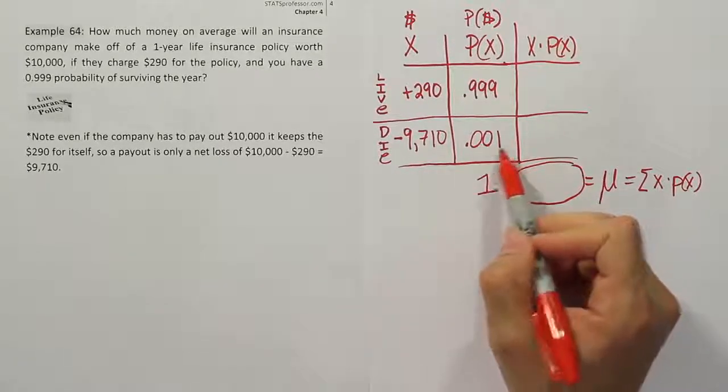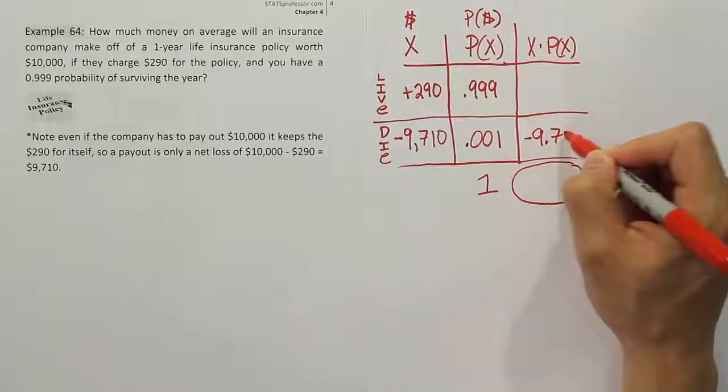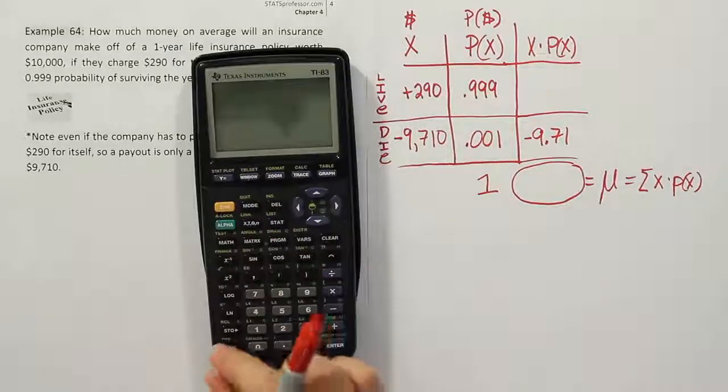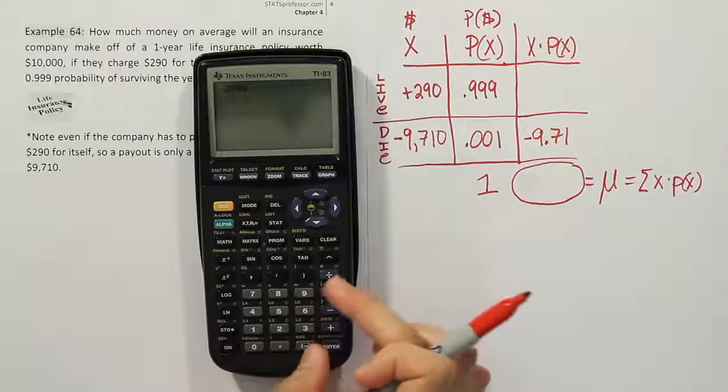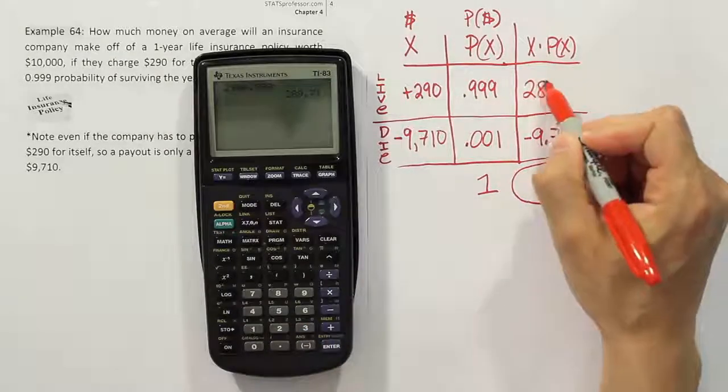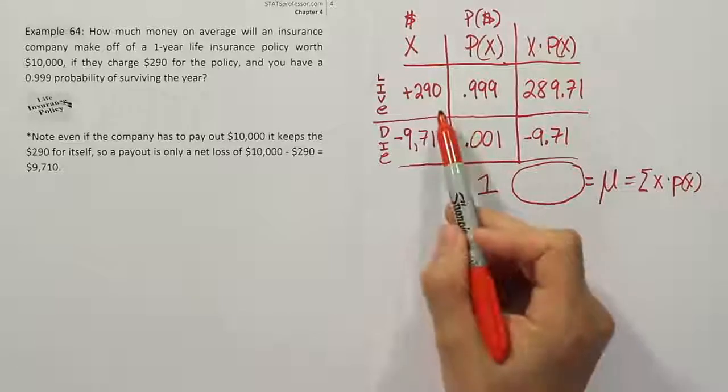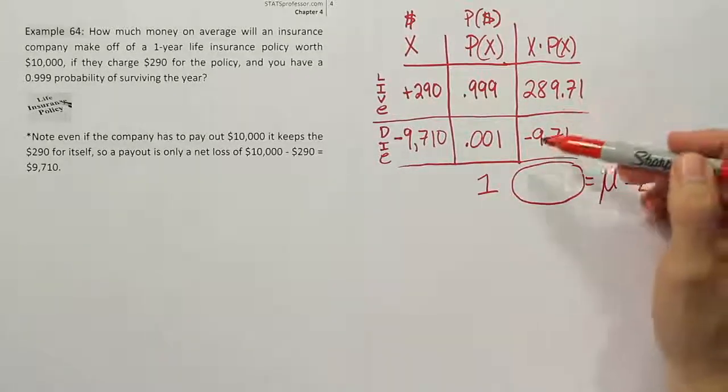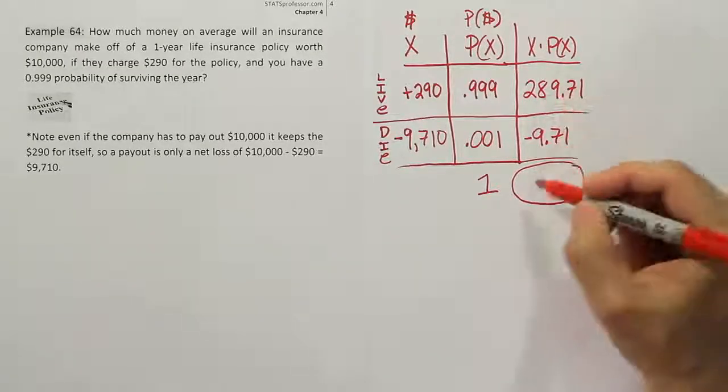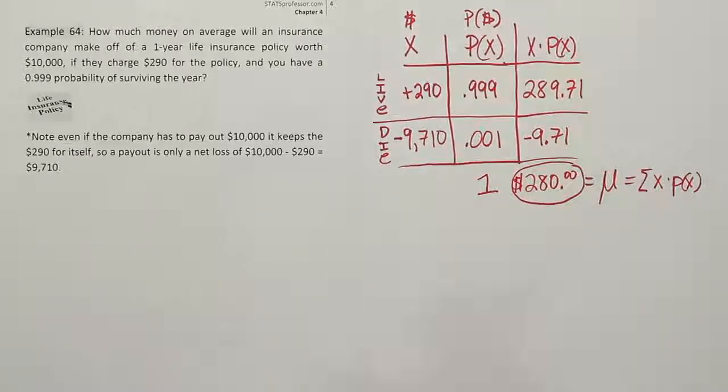All we have to do is multiply straight across and we'll be done. This one's very easy because this is like dividing by 1,000, so we'll move the decimal point over three places. So I know this one will be minus $9.71. Let's see what the other one works out to be. 290 times .999, and when I'm done, I get 289.71. Because this one is negative, this will actually subtract and $9.71 will be removed from that total. We'll end up with an even number of $280.